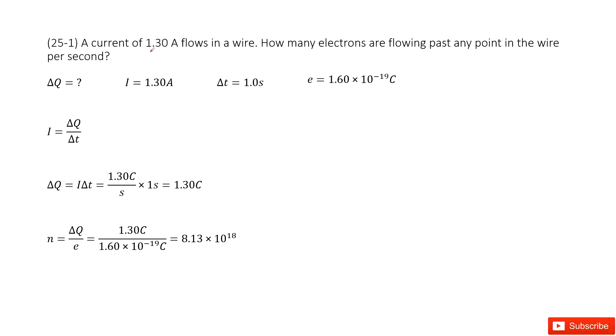The question asks how many electrons flow per second in the wire. The keyword 'per second' tells us the time interval. We can write Δt as 1 second.